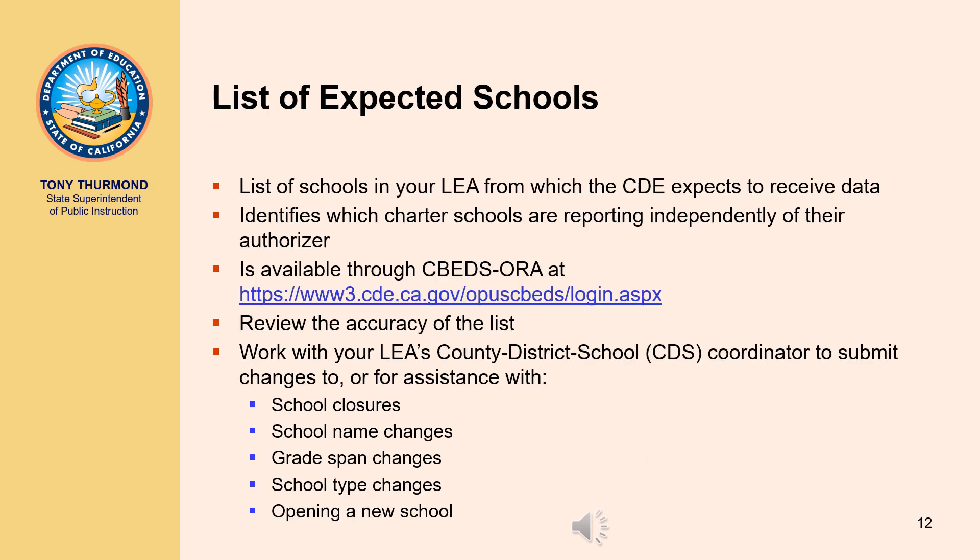The list of expected schools is a list of the schools in your LEA from which the CDE expects to receive data. It also identifies which charter schools are reporting independently of their authorizer. The list is available online through CBEDS Aura. It is very important to review the accuracy of this list prior to submitting your CBEDS data, as data submissions may be prevented if you do not have data for all schools on the list. You will also be prevented from submitting data for new schools not appearing on the list.